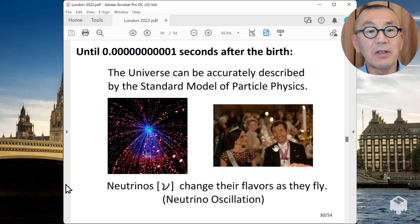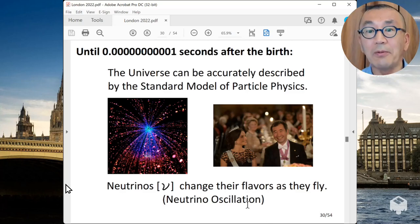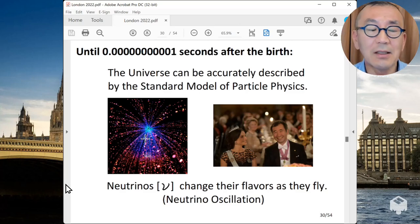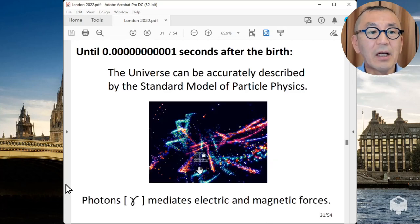One of the interesting properties of neutrinos is called neutrino oscillation. It changes the type of neutrino as it flies. And we tried to show that in the movie. In the movie, you see that neutrinos are coming down from the ceiling, and it changes the color, and it's supposed to represent the neutrino oscillation.